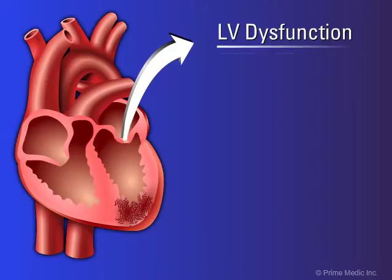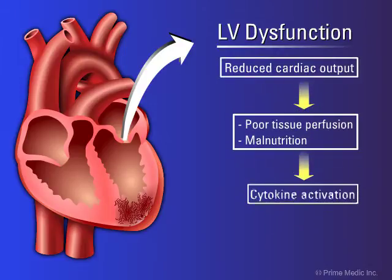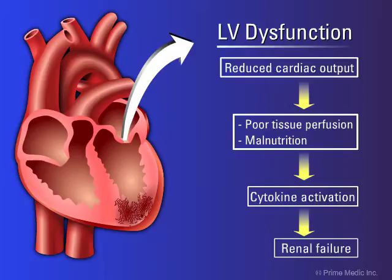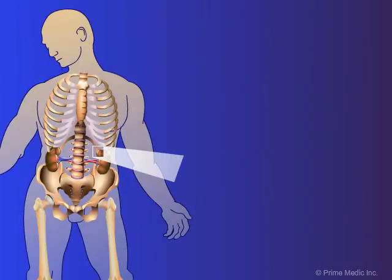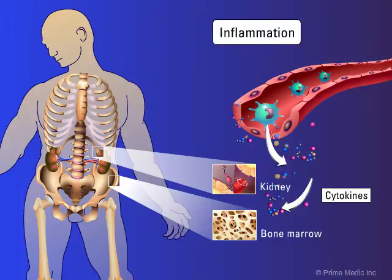Maladaptive consequences may lead to reduced cardiac function, which leads to poor tissue perfusion, malnutrition, and cytokine activation. A number of downstream organs may then be affected by the cytokines and impaired perfusion, including the kidneys. The effects of the cytokines on the kidneys and the bone marrow are marked by the development of anemia.